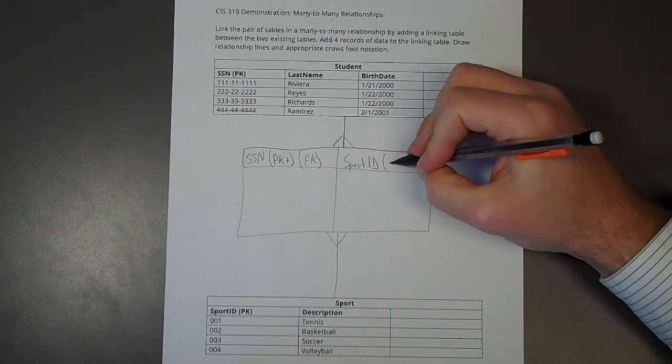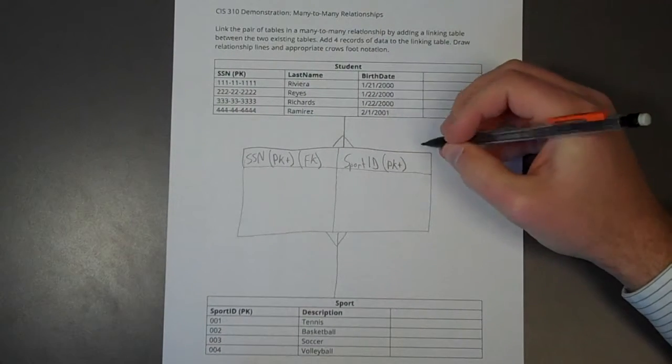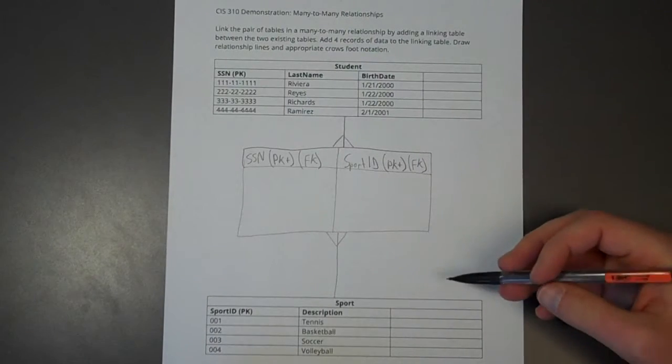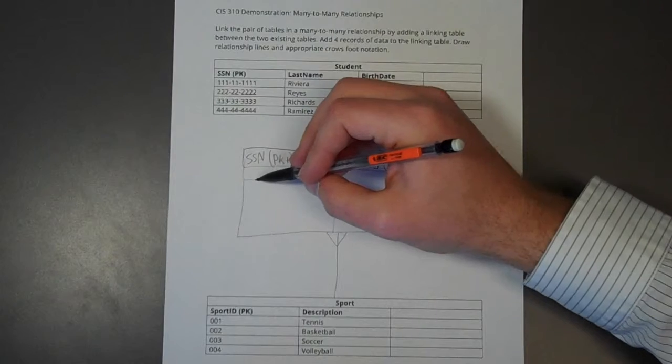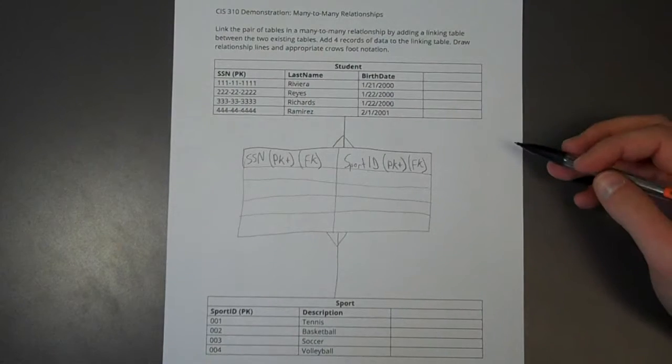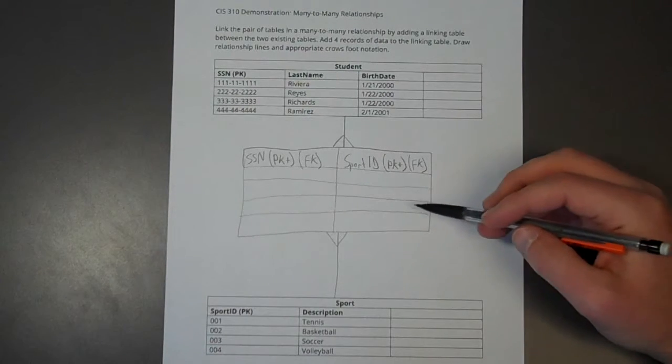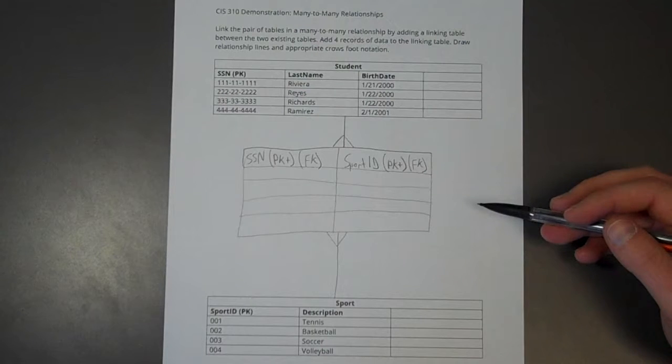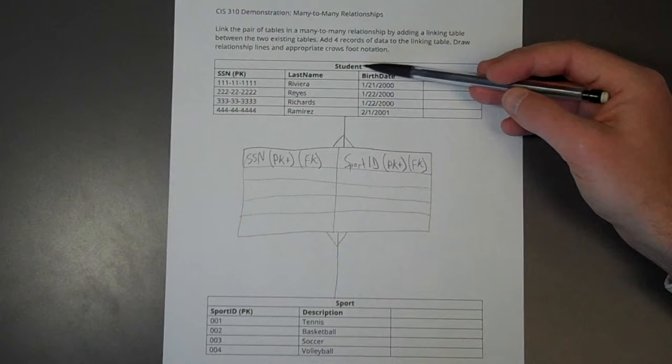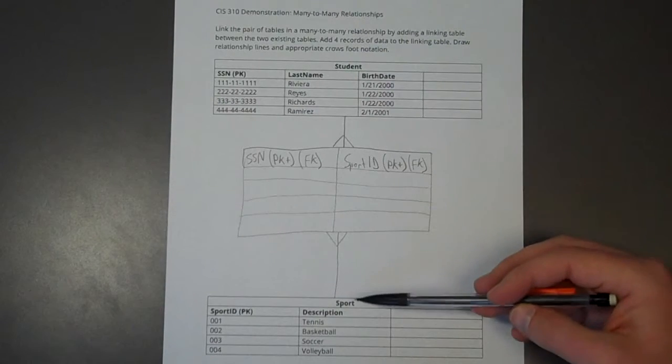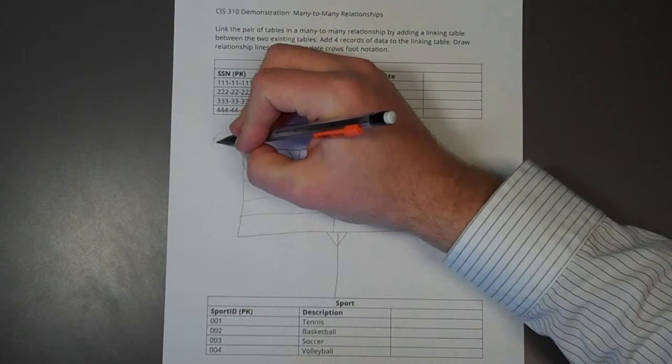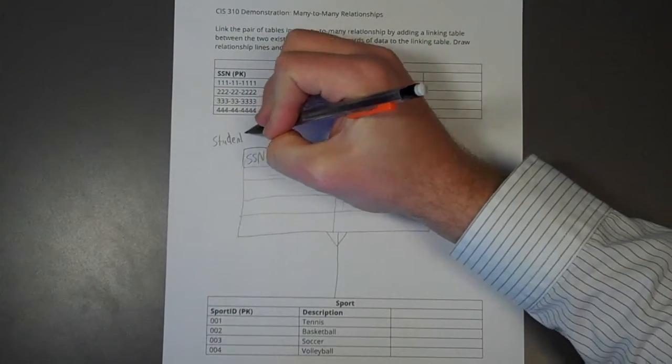And this field is, again, a component of the composite primary key. And it is a foreign key because it is another table's primary key. And so we're going to be putting some data into these records. But before I do that, a question is often asked, what do I name this table? And usually in linking tables or junction tables, you give it a name that is the name of the one table in the relationship and the name of the other table in the relationship next to each other. So I could call this table student sport.